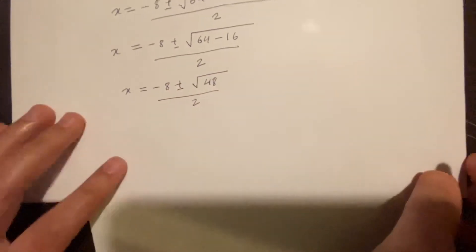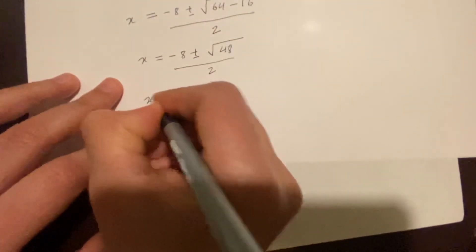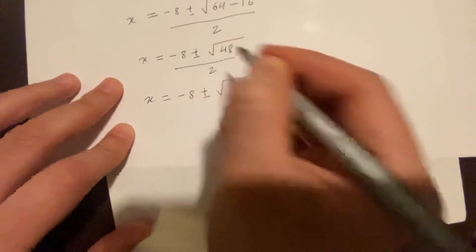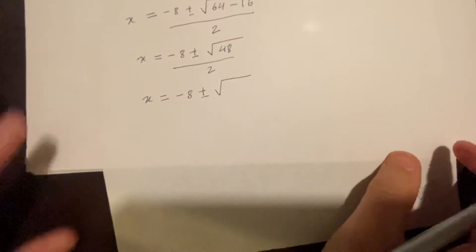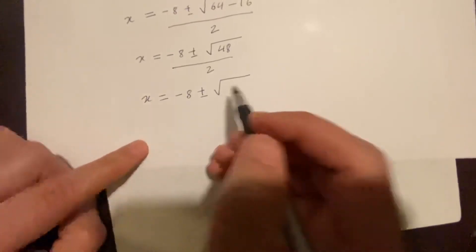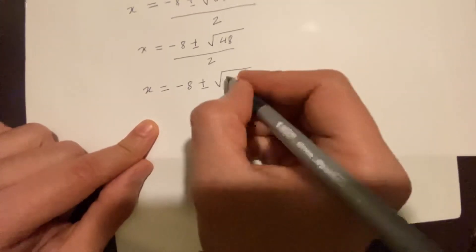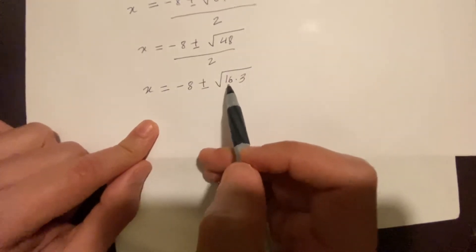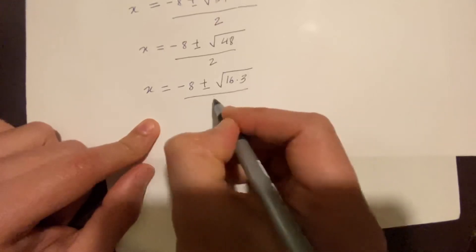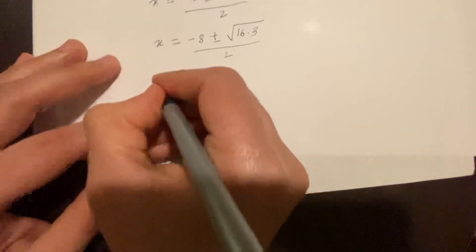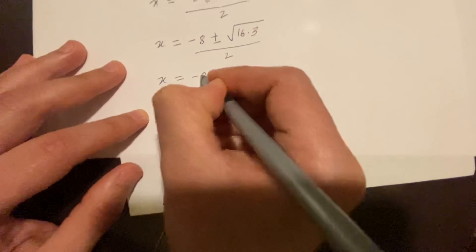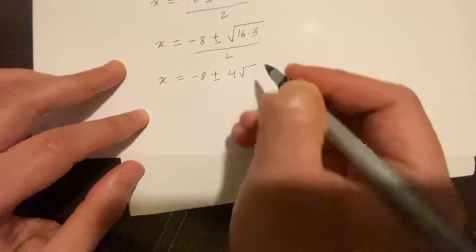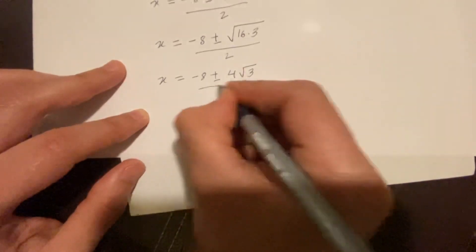Now let's simplify the square root of 48. We need a factor we can take the square root of, so 48 equals 16 times 3. That way we can take the square root of 16, giving us 4. So x equals negative 8 plus or minus 4 times the square root of 3, over 2.